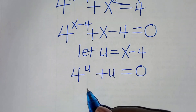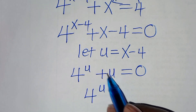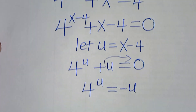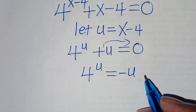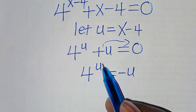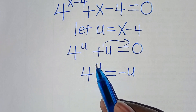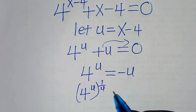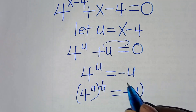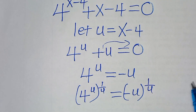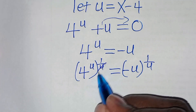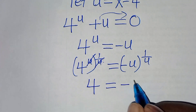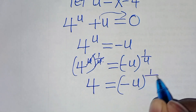The next step: we have 4 raised to the power of u. Let's take plus u to the right hand side, so this is equal to minus u. Now, we have a power of u here, so we can eliminate this u by multiplying both sides by 1 over u, so that the power simplifies — u and u cancel — giving us 4 is equal to minus u raised to the power of 1 over u.